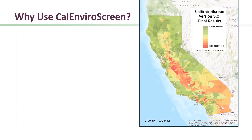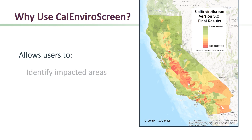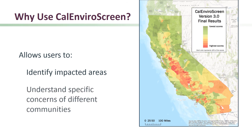One of the values of using CalEnviroScreen is that it allows people concerned about environmental justice and the cumulative impacts of pollution on communities in California to identify areas impacted by multiple burdens. It also helps us to understand some of the specific issues in different communities.